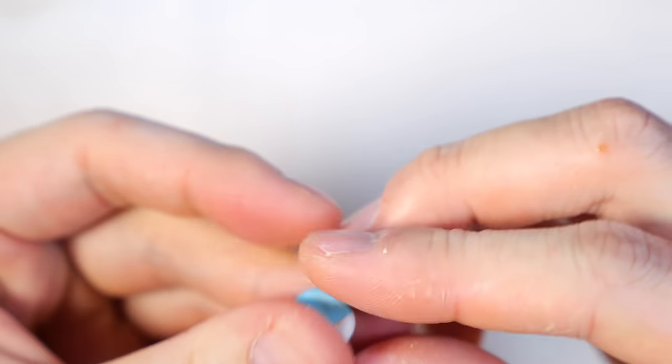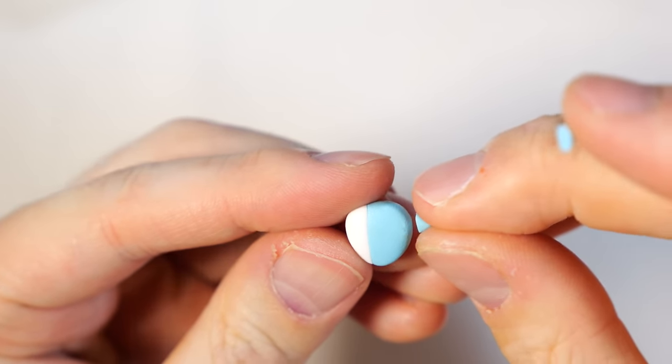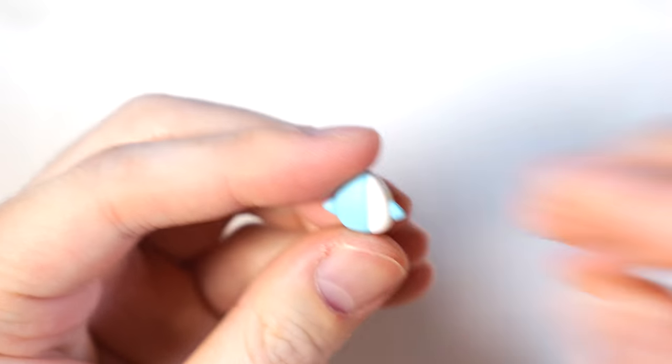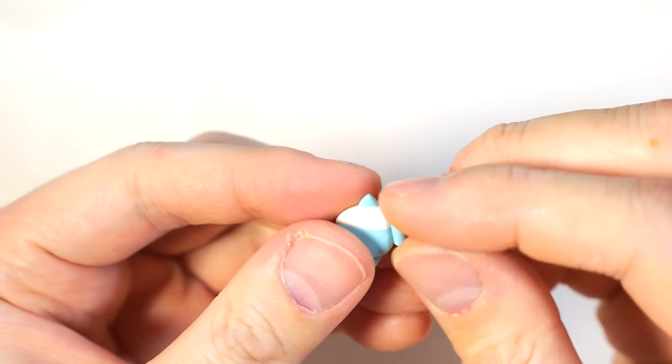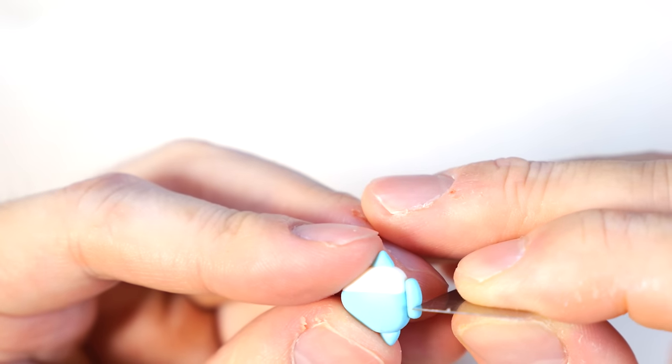And just shape it up a little bit more, and on the tips we're gonna add two little triangles for the fins.